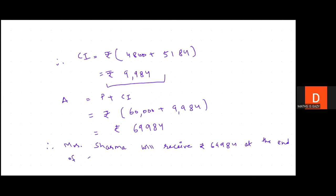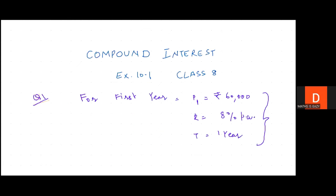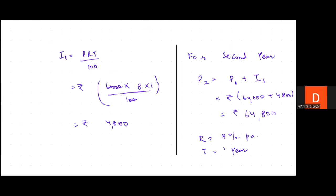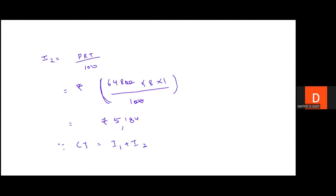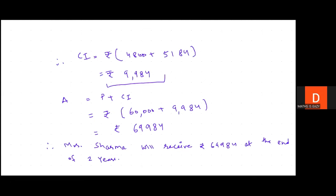Hope the question is clear. To recap question one: for each year we calculated interest using P × R × T / 100. Total compound interest = Interest 1 (first year) + Interest 2 (second year). Then amount = Principal + Compound Interest. Let's move to question number 2.